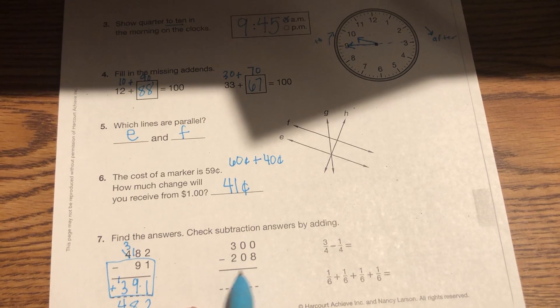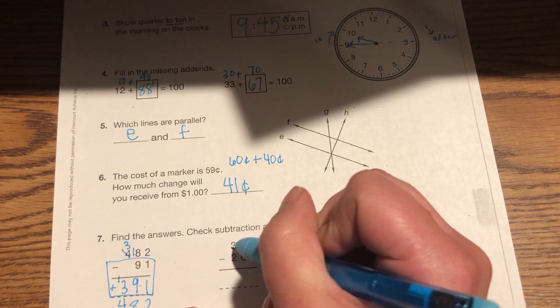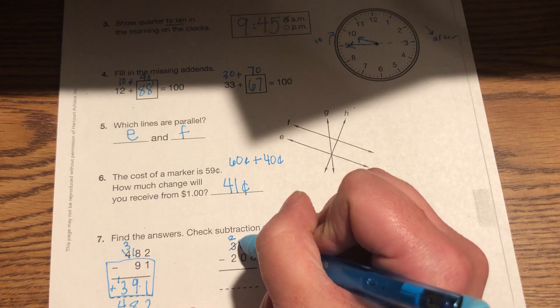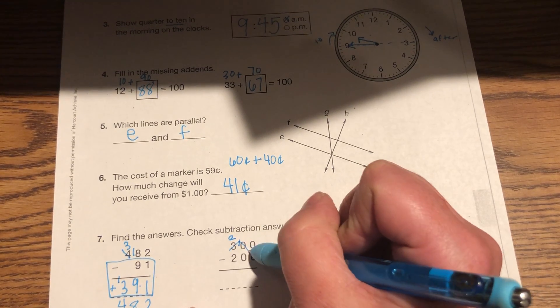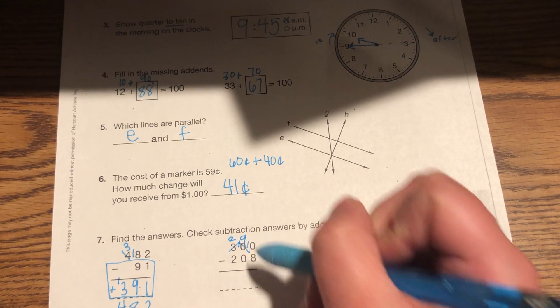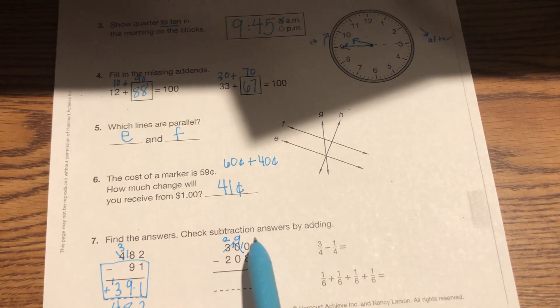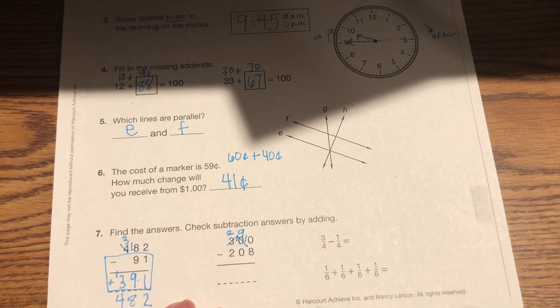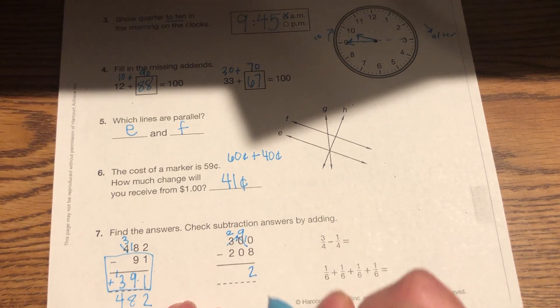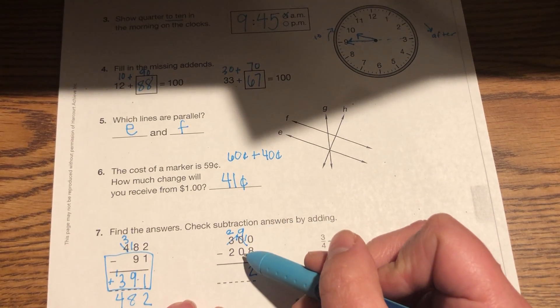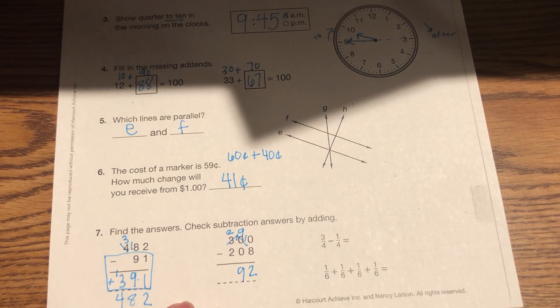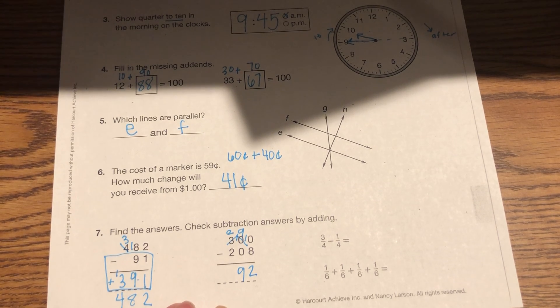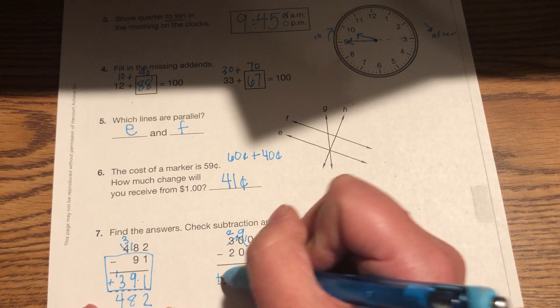Okay, now 300 subtracting 208. So I know I'm going to have to borrow here, so I make it 10 tens. I'm going to borrow that, make it 9 tens and 10 ones. 10 minus 8 is 2. 9 minus 0 is 9. 2 minus 2 is 0. So 92 is our answer.